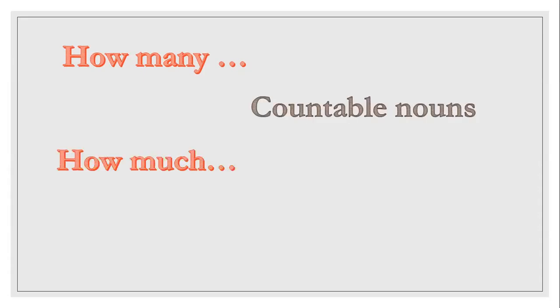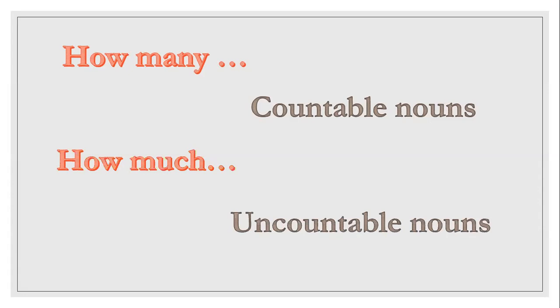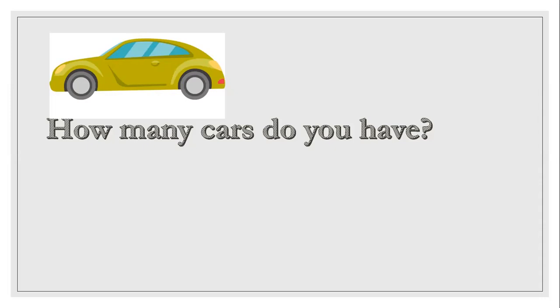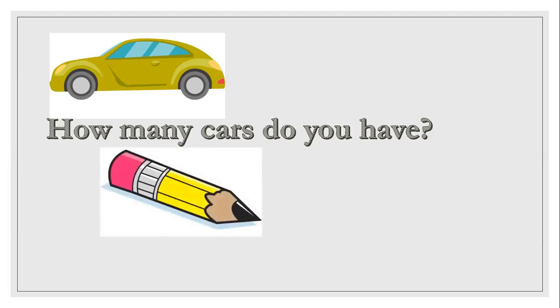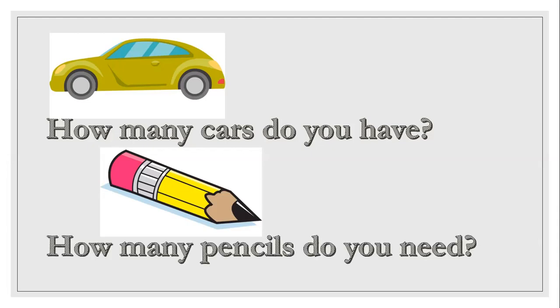We use 'how many' for countable nouns and 'how much' for uncountable nouns. For example, a car is countable, so we use 'how many': How many cars do you have? I have three cars — just kidding, I actually have two motorcycles! And a pencil: one, two, three pencils — countable. How many pencils do you need? I need two pencils.